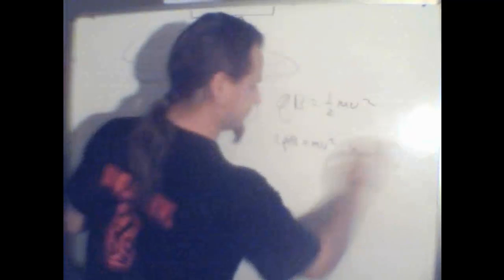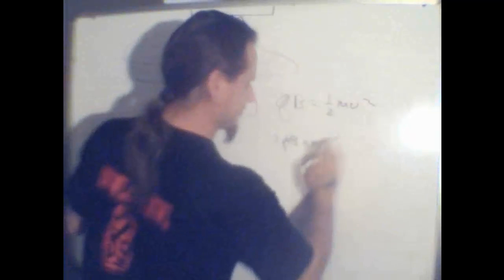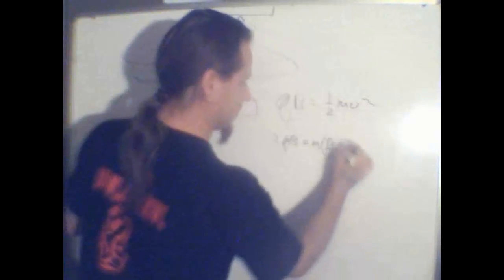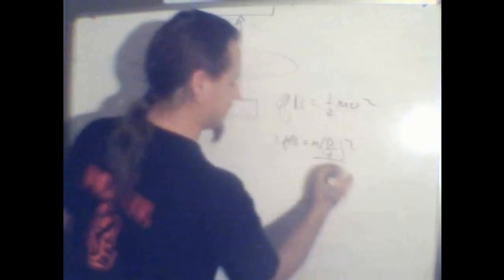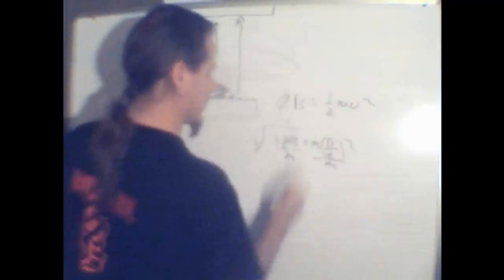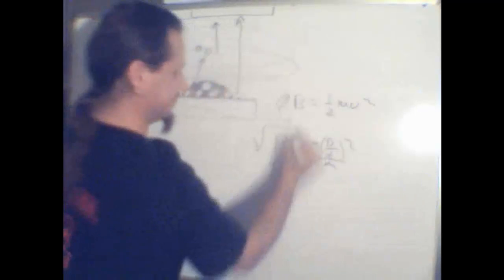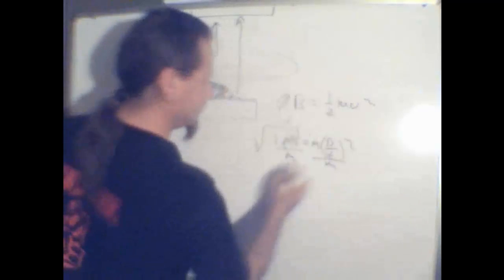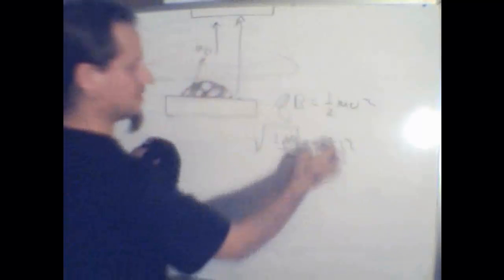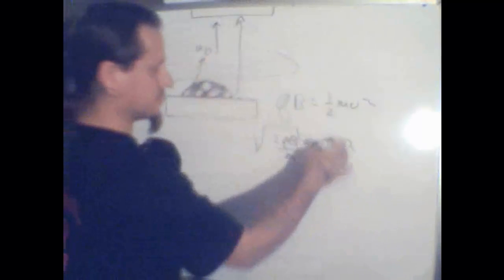Once you isolate, it's p over t squared, divide by m, square root, and you've got distance over time. Distance we know, find out the time.